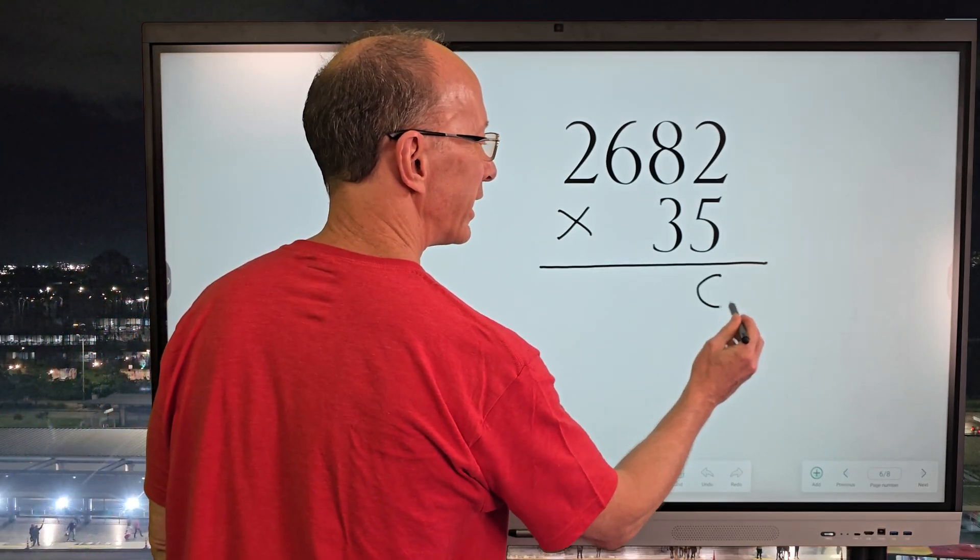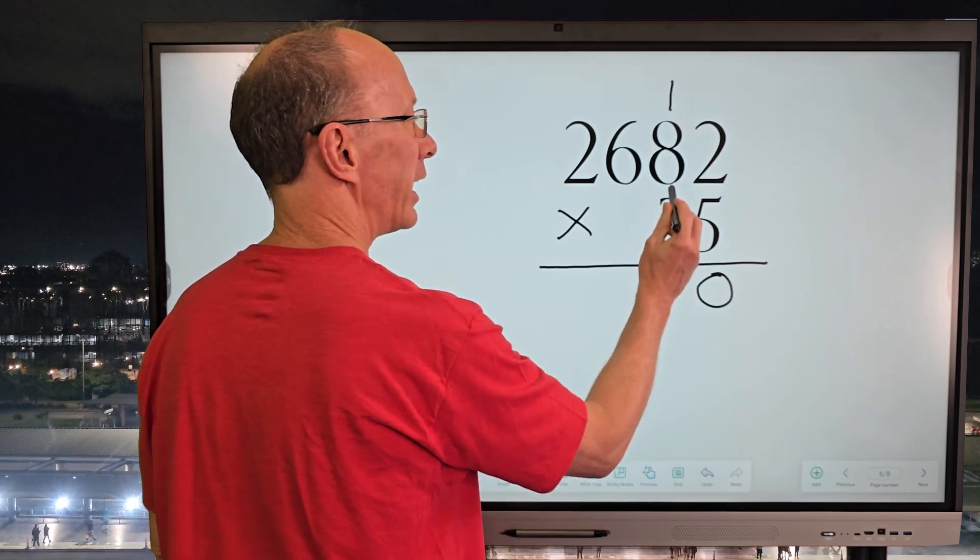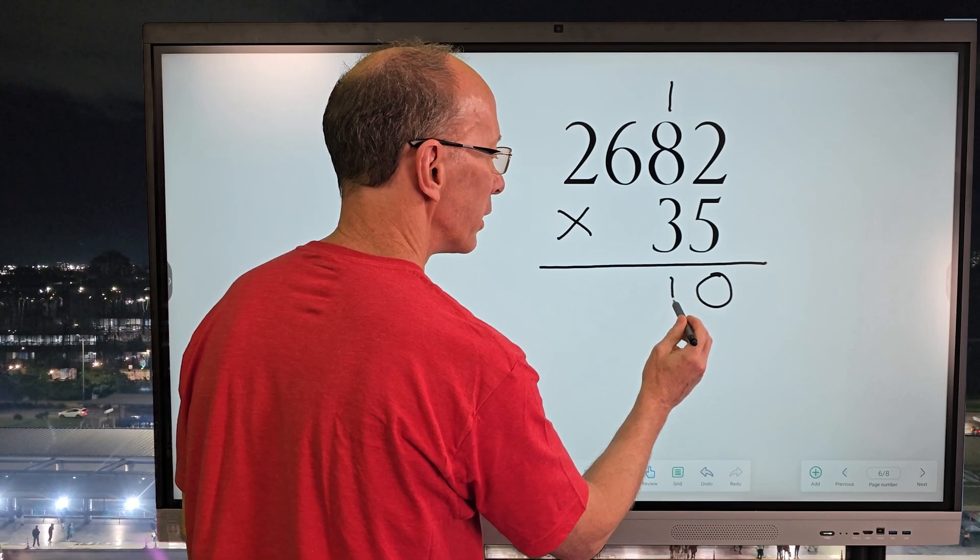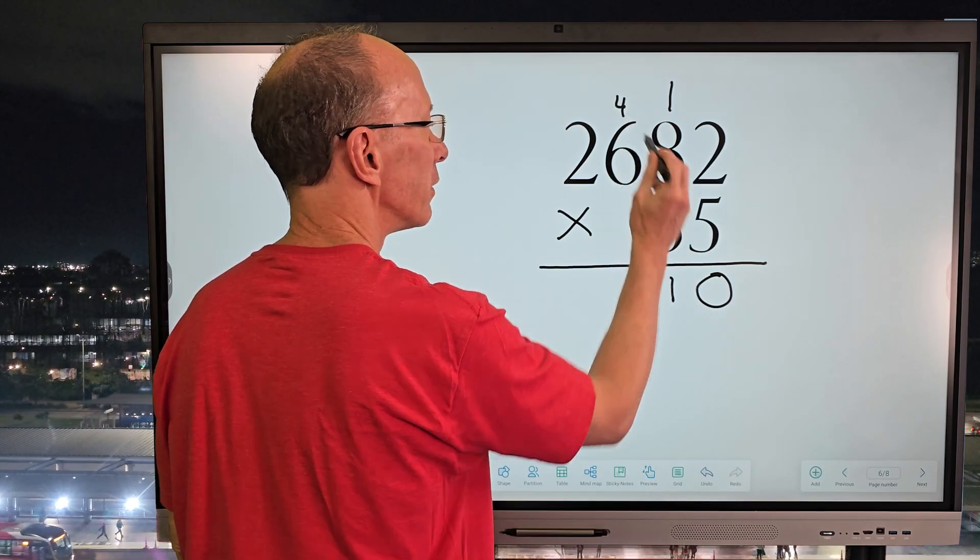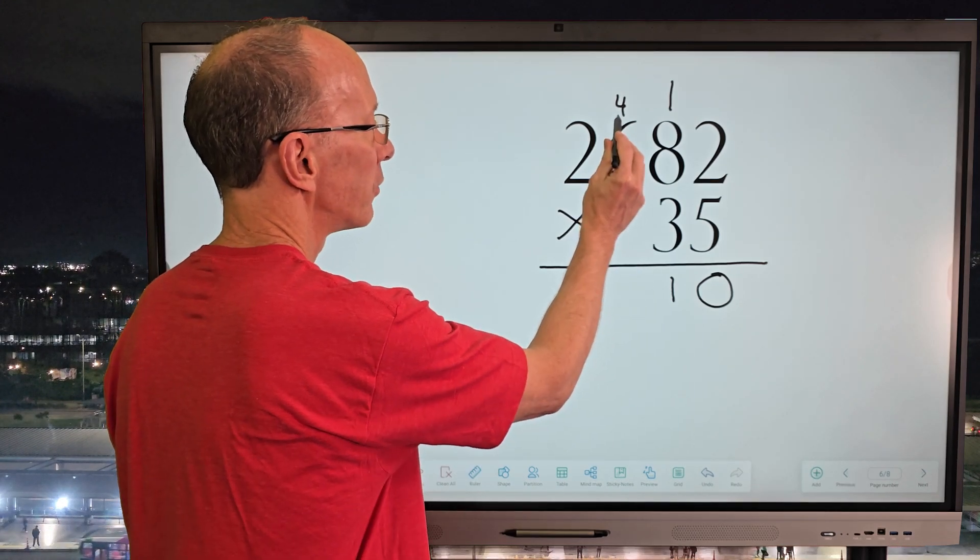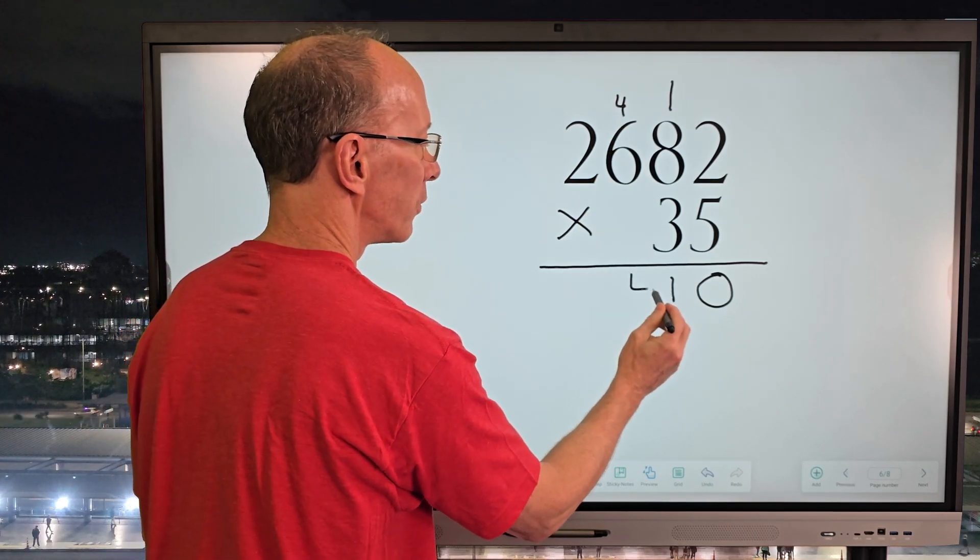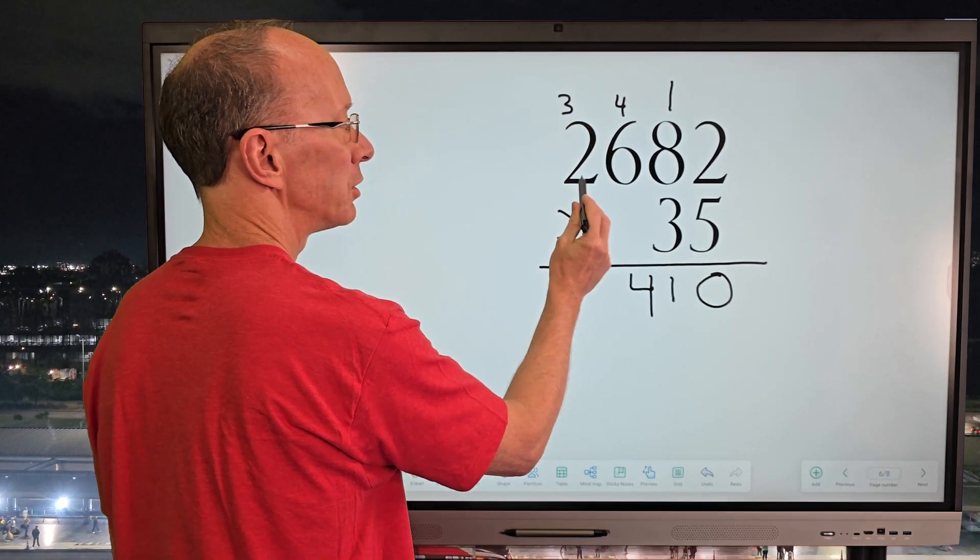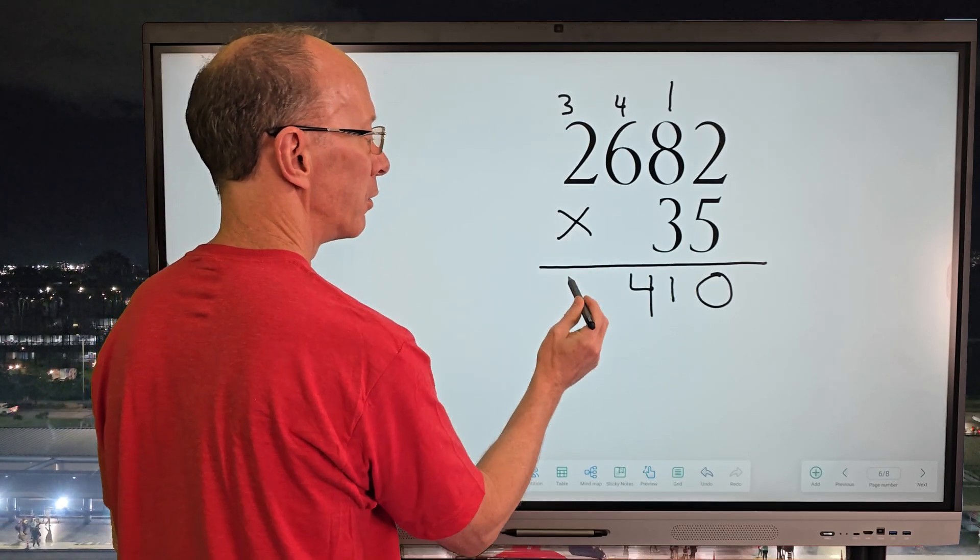2 times 5 equals 10. Carry the 1. 8 times 5 equals 40 plus the 1 would be 41. Bring that 4 up here. And then 5 times 6 equals 30 plus the 4 would be 34. So put the 4 right here and then 3 right here. And then 5 times 2 is 10 plus the 3 would be 13.